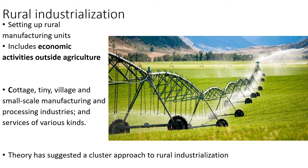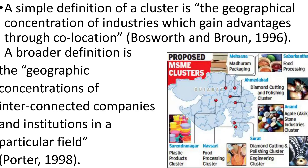Theory has suggested a cluster approach to rural industrialization — that is, the geographical concentration of industries that gain advantage through co-location. That is Bosworth and Brown in 1996. A broader definition is the geographical concentrations of inter-connected companies and institutions in a particular field — that is Porter, 1998. You can see an example here in Gujarat: we have clusters like plastic products cluster, food processing cluster, diamond cutting cluster, and so on.